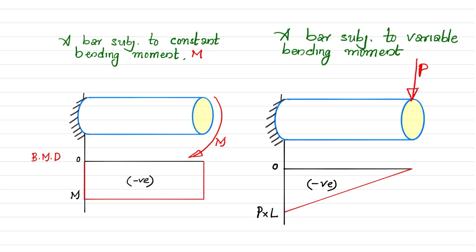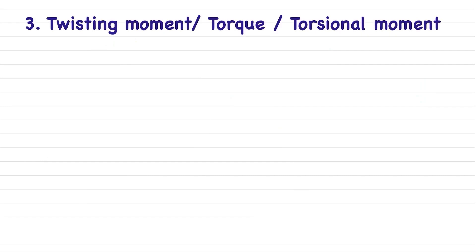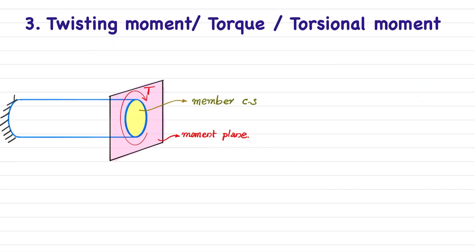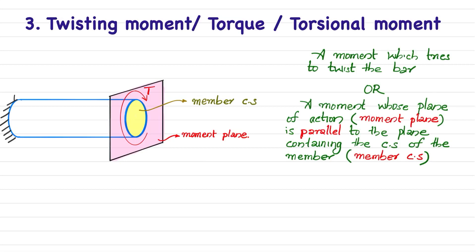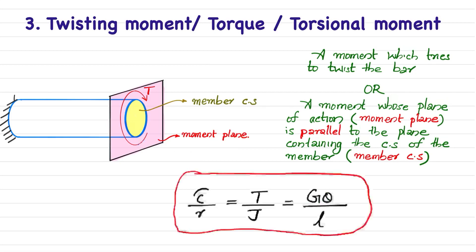The third type of load is twisting moment, torque, or torsional moment. Here you can see a similar bar whose member cross section is shown in yellow, and there is another plane known as the moment plane because the moment is acting in that direction. In this case, the member cross section plane and the moment plane are parallel to each other. A moment which tries to twist the bar, or whose plane of action is parallel to the plane containing the cross section of the member, is known as twisting moment or torque. The stress induced is torsional shear stress, given by tau / r = T / J = G theta / L.